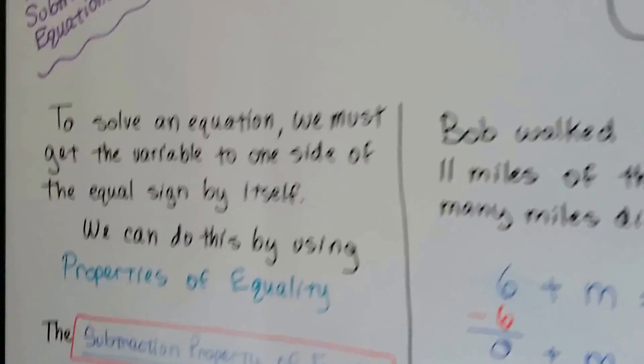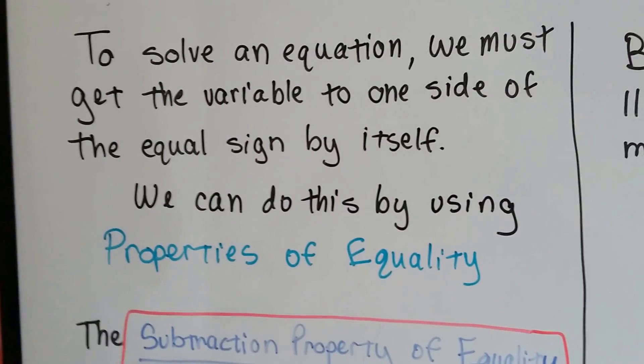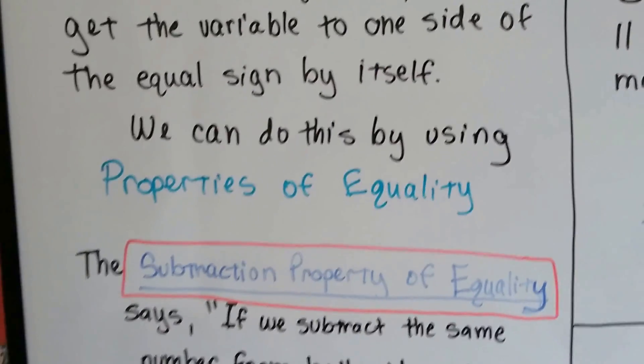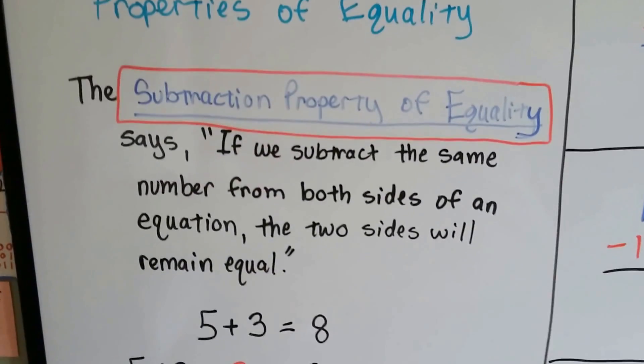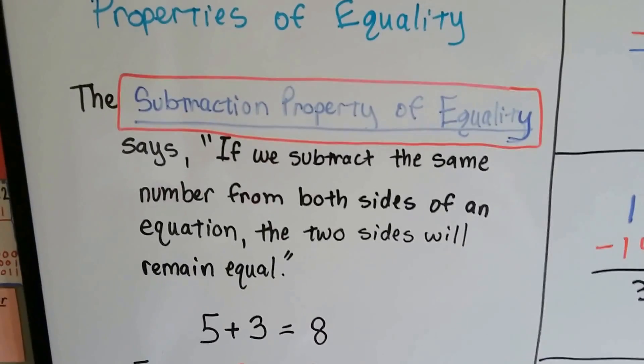To solve an equation, we must get the variable to one side of the equal sign by itself. We need to isolate it, and we can do this by using properties of equality. This is where you get your notes out and you write this down. Add it to your notebook.